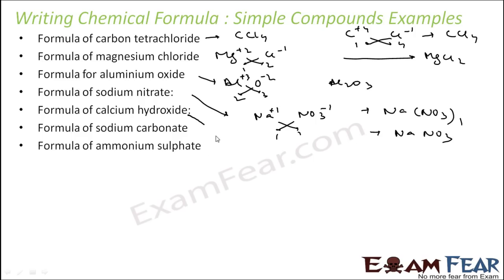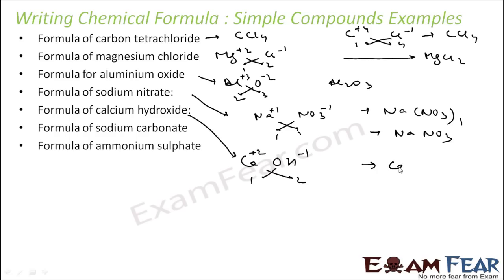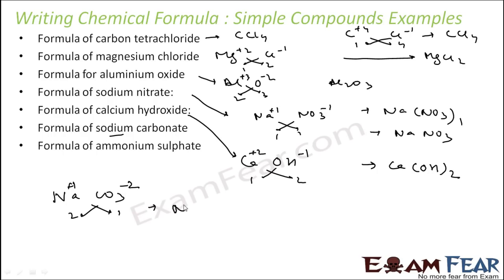Calcium hydroxide: calcium is metal, OH minus has a charge of minus 1, calcium is plus 2. This becomes 1 here and 2 here, so the formula is Ca(OH)2. OH is a polyatomic ion. Similarly, sodium carbonate: Na has plus charge, CO3 is a minus 2 charge — this becomes Na2CO3. Since CO3 appears once, you can remove the brackets.